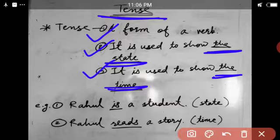So in short, whatever I mentioned over here: tense is a form of verb. It is used to show the state or it is used to show the time. The second and third points depend upon what type of verb is used in the sentence.